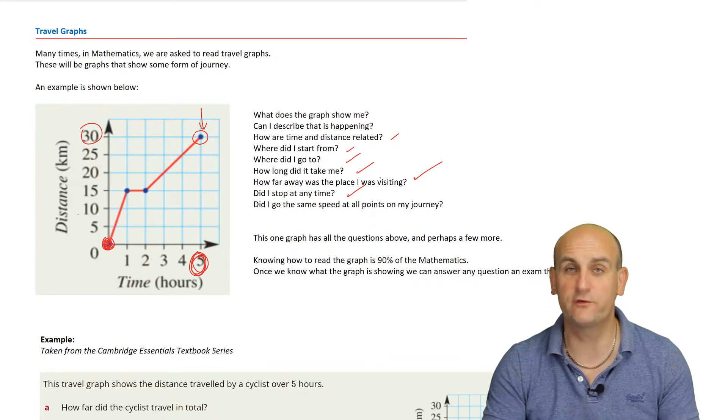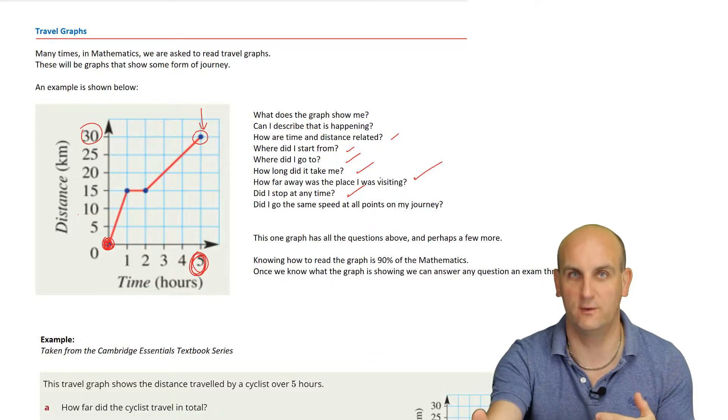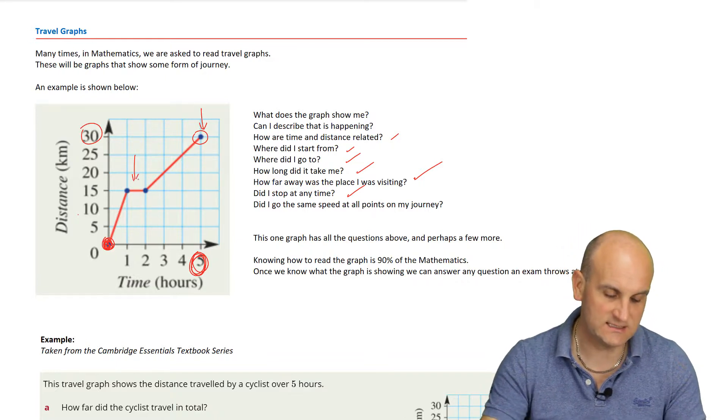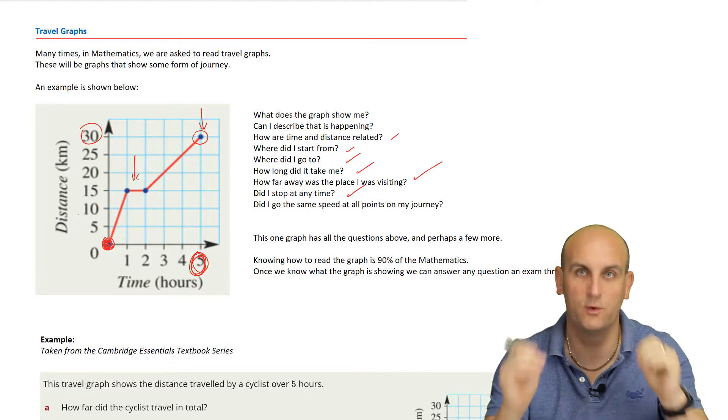Now, did I stop at any time? This is the trick one. Now, when you've stopped, you don't go any further distance. Obviously, you know, you've stopped. You're not going to get any closer to where you're going and you're not going to get any closer to where you've come from. And straight lines, that little section there, that horizontal line, tells me I have stopped.